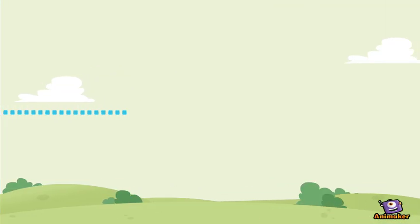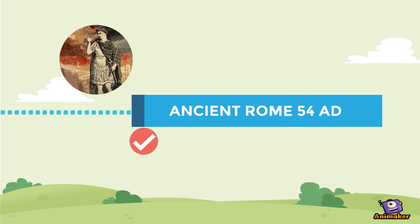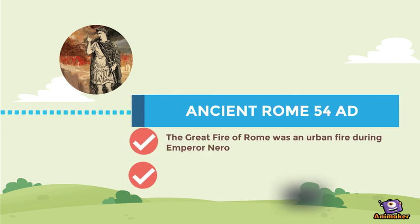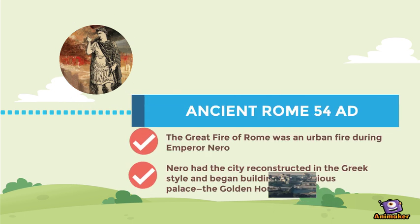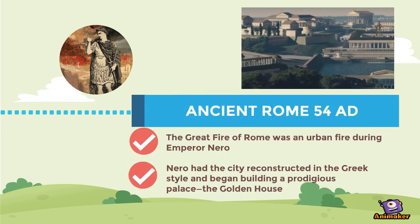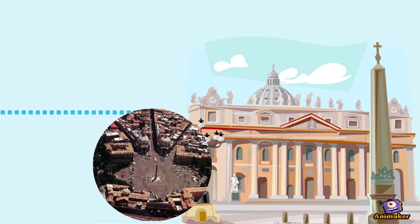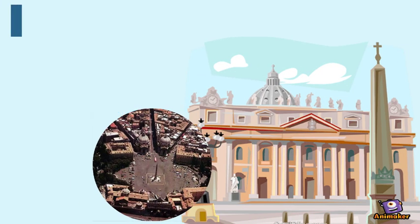Nero and the Great Fire of Rome led to the reconstruction of the city in Greek style, but it was too expensive — it almost left Rome penniless.